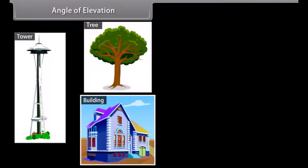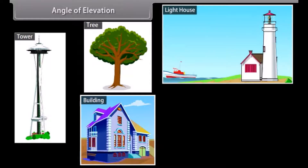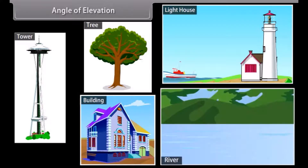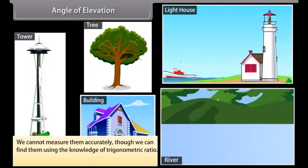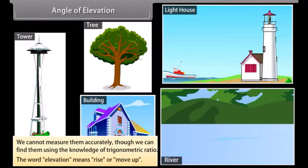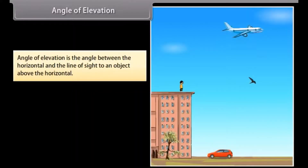Sometimes we are required to find the height of a tower, tree, building, and distances of a ship from a lighthouse, width of a river, etc. We cannot measure them accurately, though we can find them using the knowledge of trigonometry ratios. The word elevation means rise or move up. Angle of elevation is the angle between the horizontal and the line of sight to an object above the horizontal.